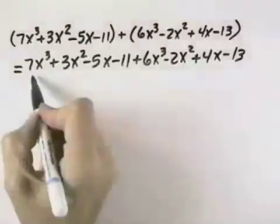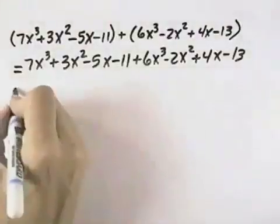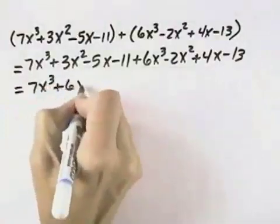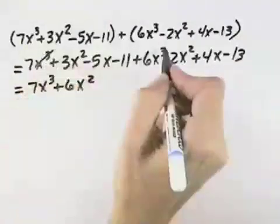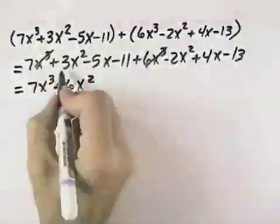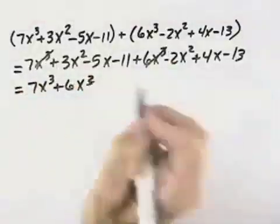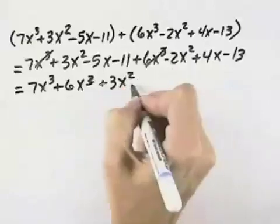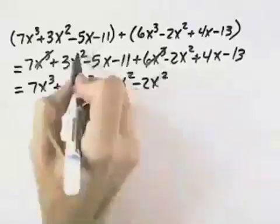What I'm going to do is group the 7x³ and the 6x³ together. I'll cross them off as I do this so I don't miss any. Then I want to group the 3x² and the -2x² together. So I can cross those off.